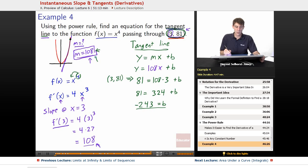So, now we know negative 243 equals b. We know what our slope is. So, that means we can describe the tangent line in general as y equals 108 times x minus 243.